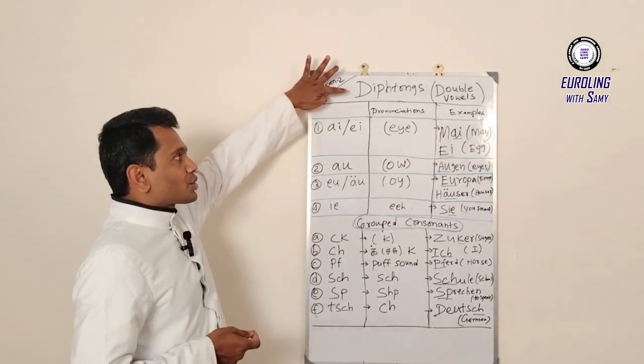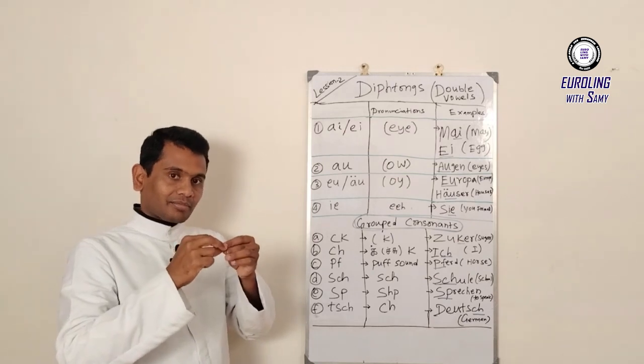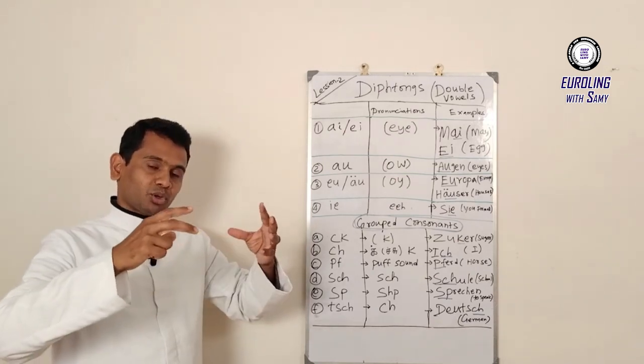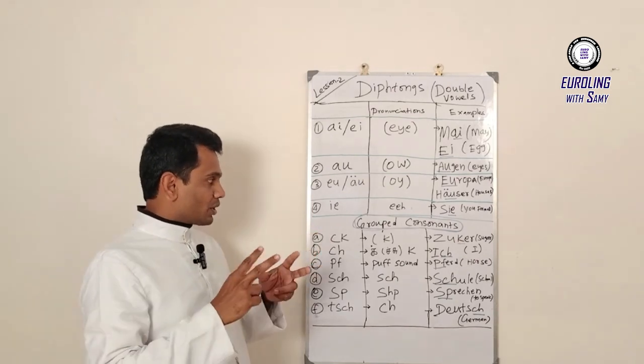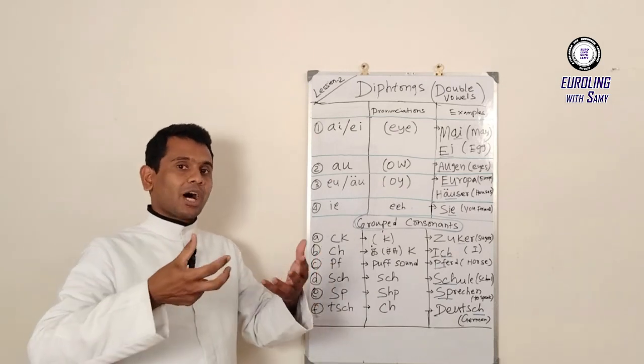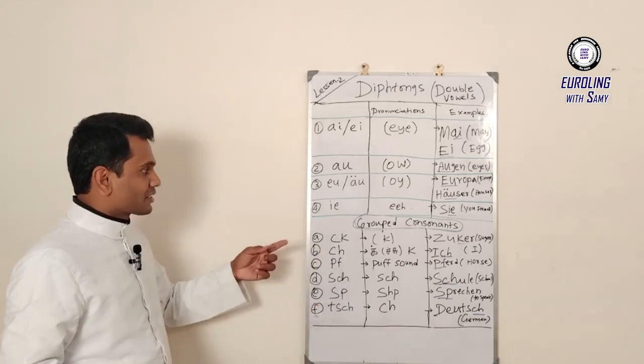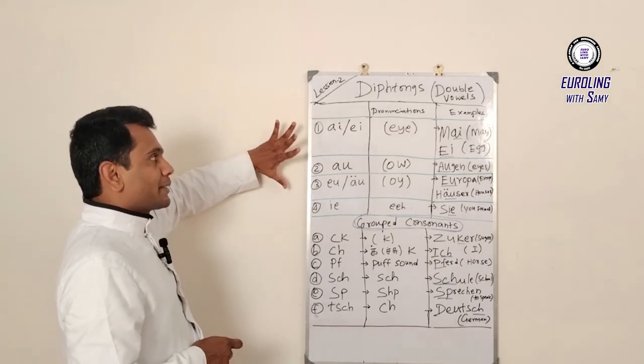The tones with the double vowels together they make a sound, they make a pronunciation. In the same way, two consonants together they make a noise, they make a sound. I will explain one by one. There are four types of double vowels.